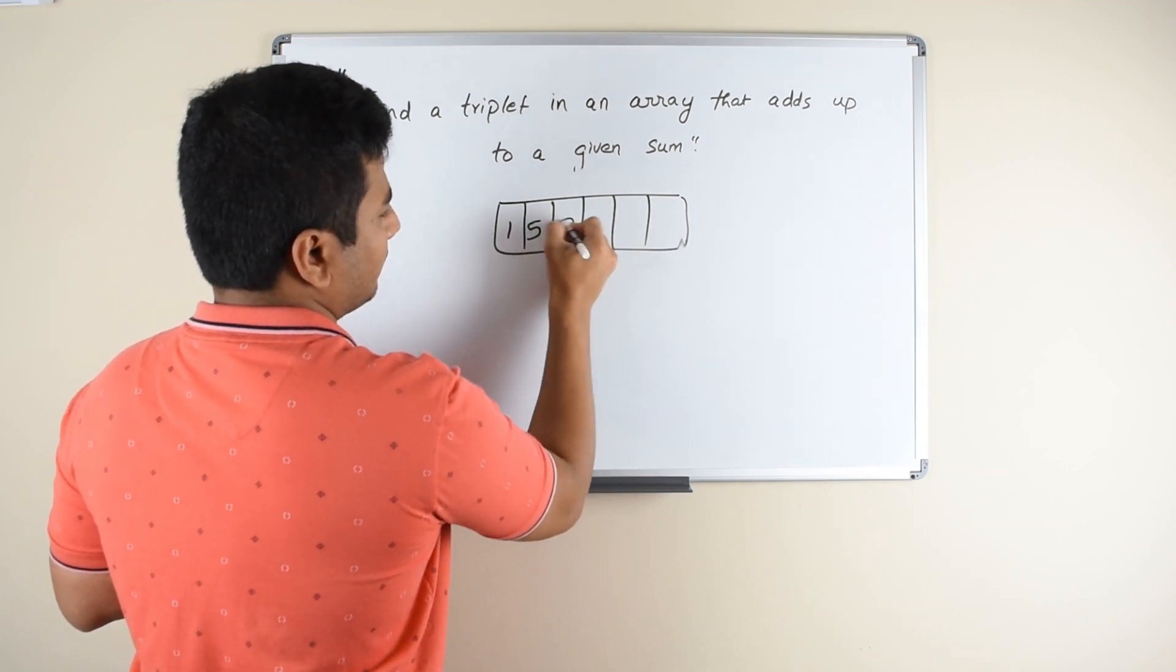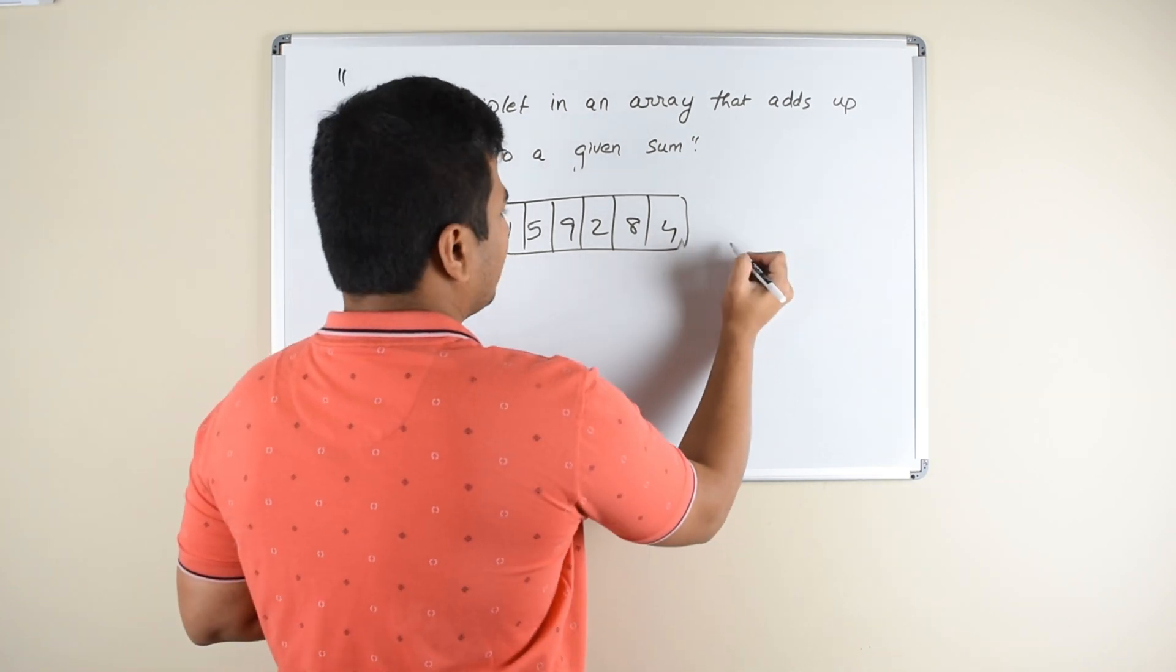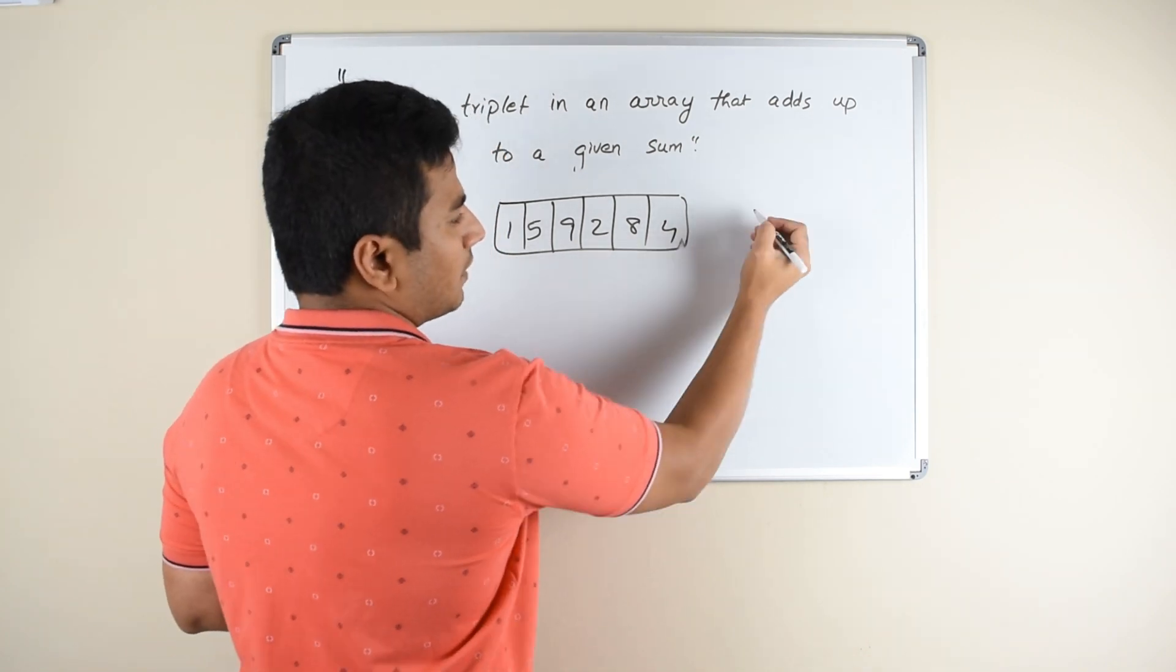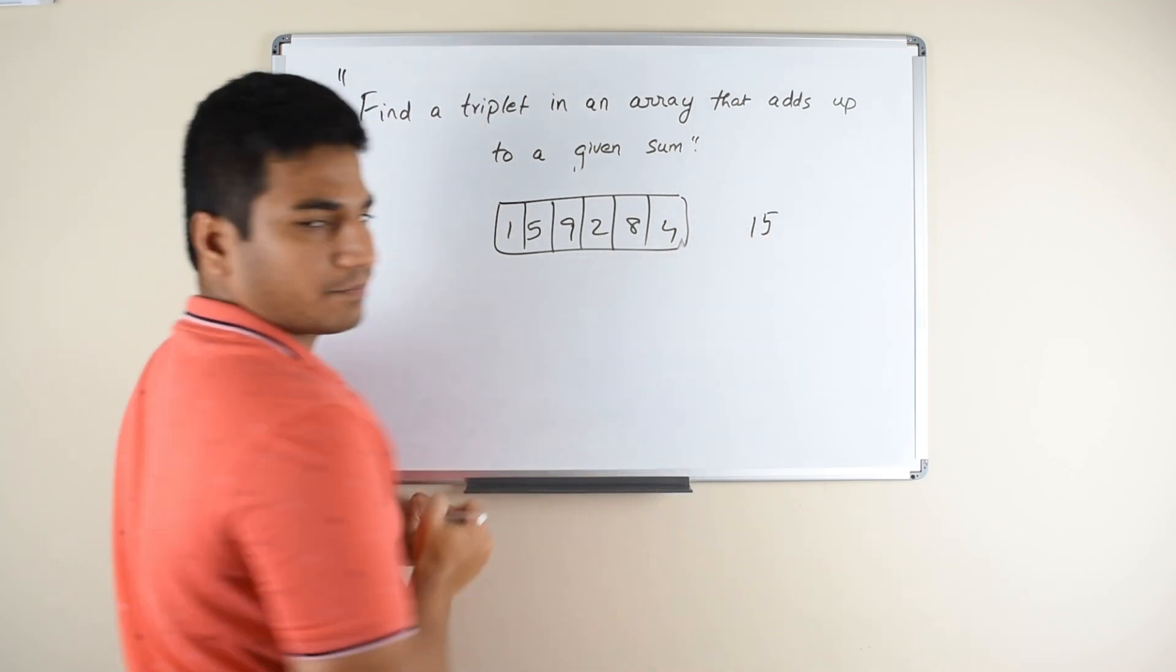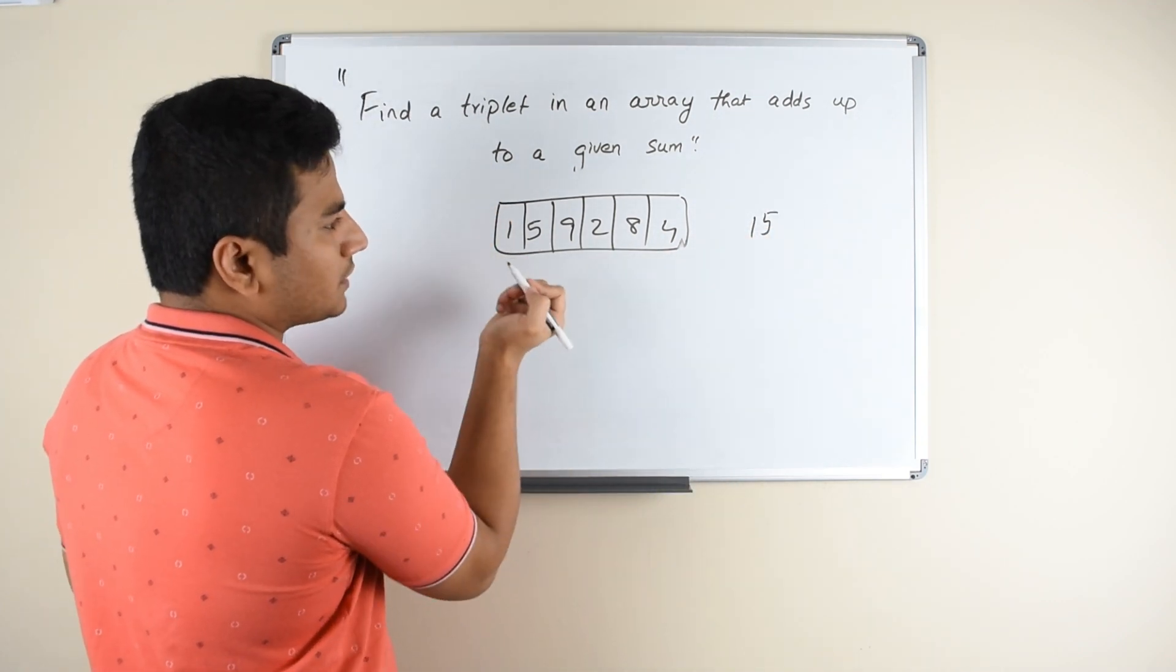1, 5, 9, 2, 8, 4. And you are supposed to find a triplet from here which adds up to a given sum of 15. Now what you do is find triplets - what triplets are possible which can add up to 15?